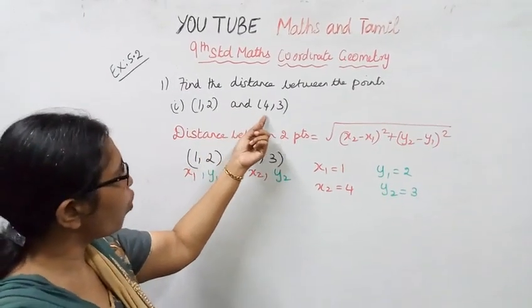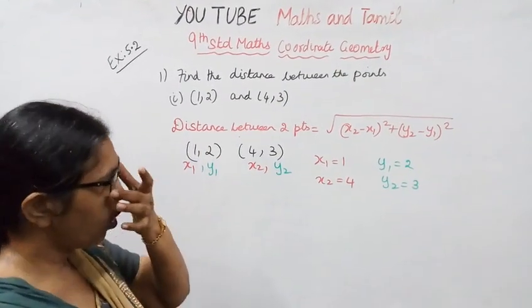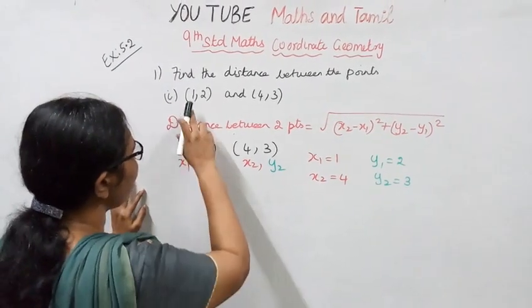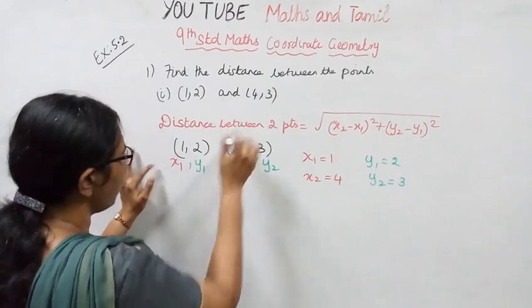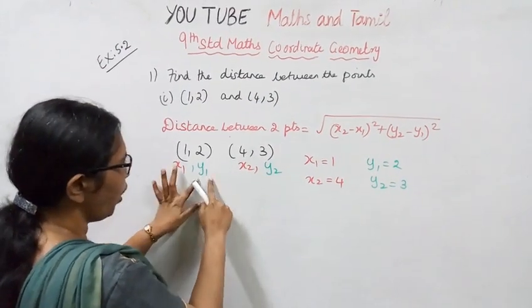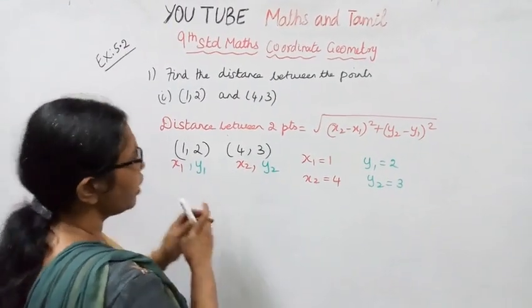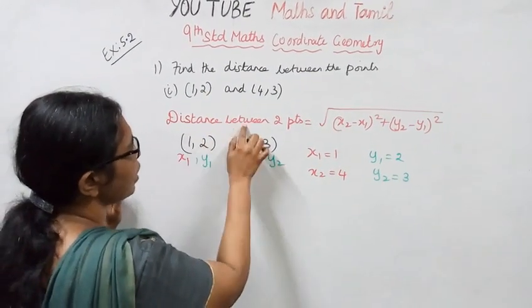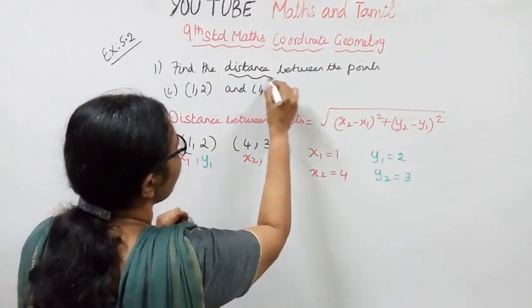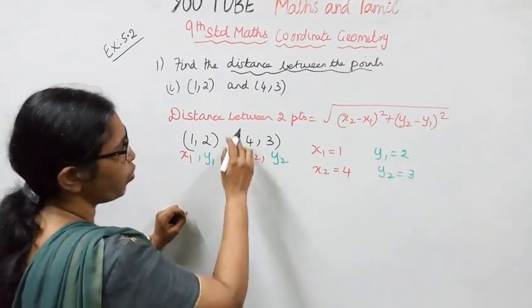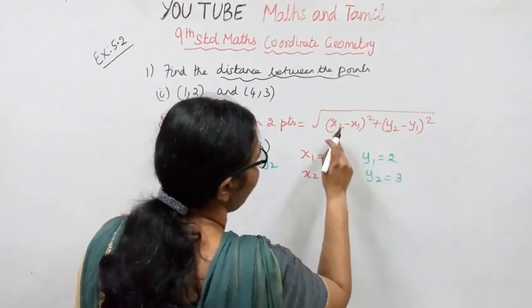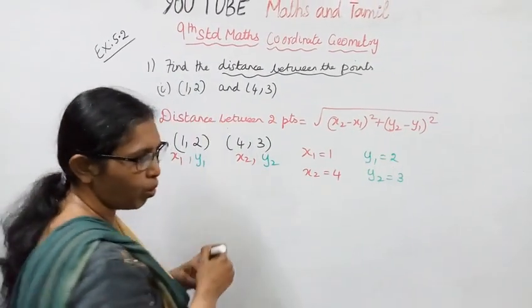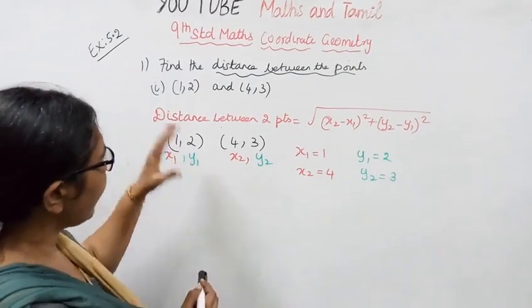You can see x1, y1 and x2, y2. Distance between the points formula is square root of (x2 minus x1) the whole square plus (y2 minus y1) the whole square.